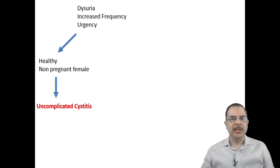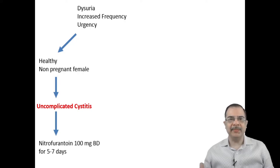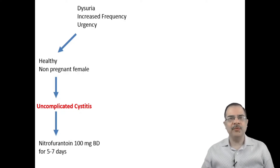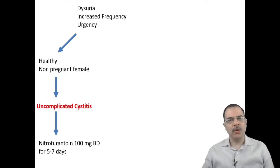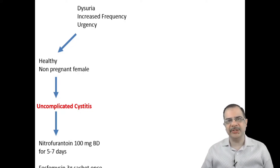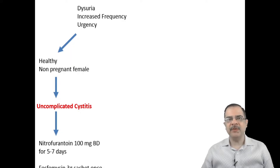In this scenario we will go for antibiotic treatment. Guidelines say that urine culture is not needed in these individuals, so we can straight away go for antibiotic treatment. The preferred antibiotic is nitrofurantoin; the dose will be 100 mg twice daily for 5 to 7 days. Alternatively, we can give a single dose of fosfomycin — fosfomycin comes in sachet form, so one sachet is sufficient and should be dissolved in one full glass of water.